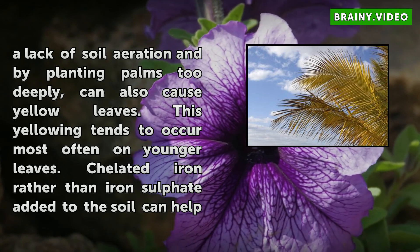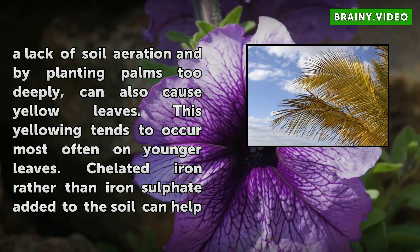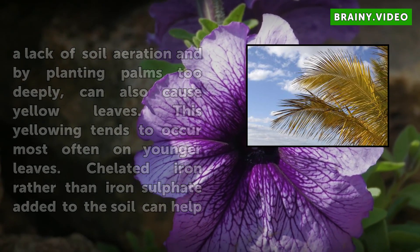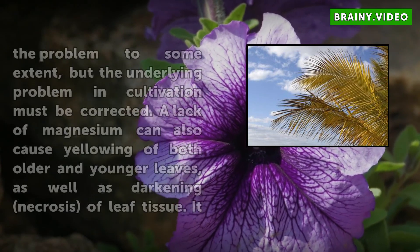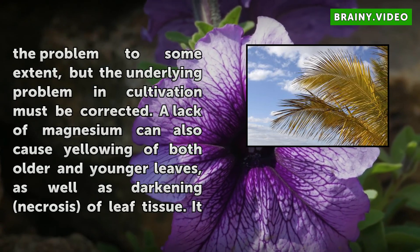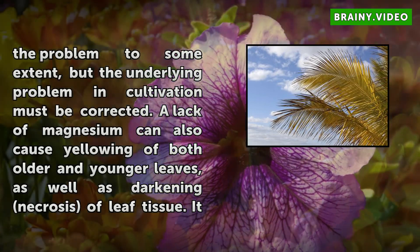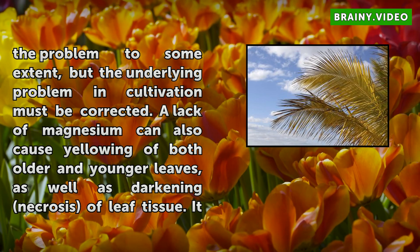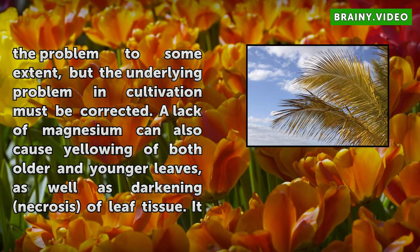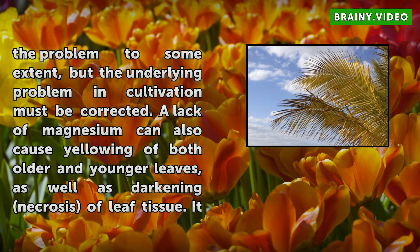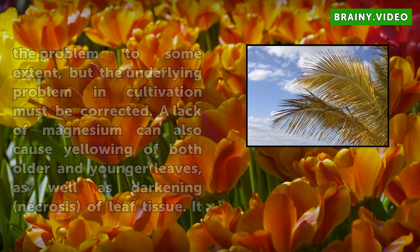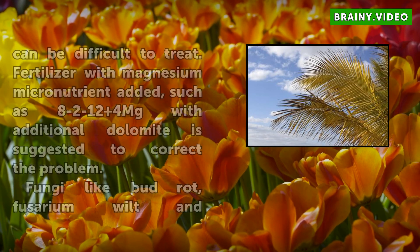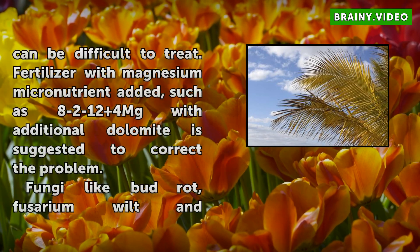A lack of magnesium can also cause yellowing of both older and younger leaves, as well as darkening necrosis of leaf tissue. It can be difficult to treat. Fertilizer with magnesium micronutrient added, such as 8-2-12+4Mg with additional dolomite, is suggested to correct the problem.